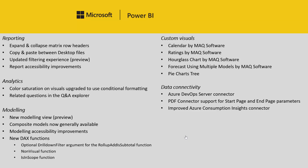The first feature is one that's been near the top — between one and four usually — of our IDEA site for quite some time, which is expand and collapse in our matrix. We've been working on this for quite a while, with several engineers dedicated to it, and we're really excited that we can finally announce that you can now expand individual nodes of your row headers in the matrix. Let me show you how to do that.